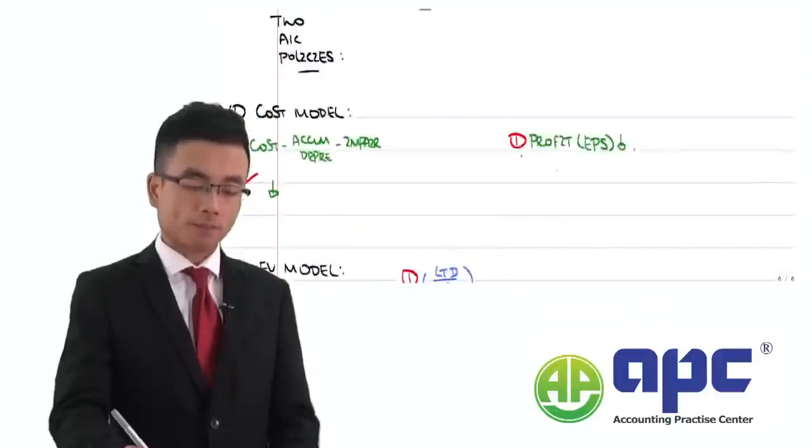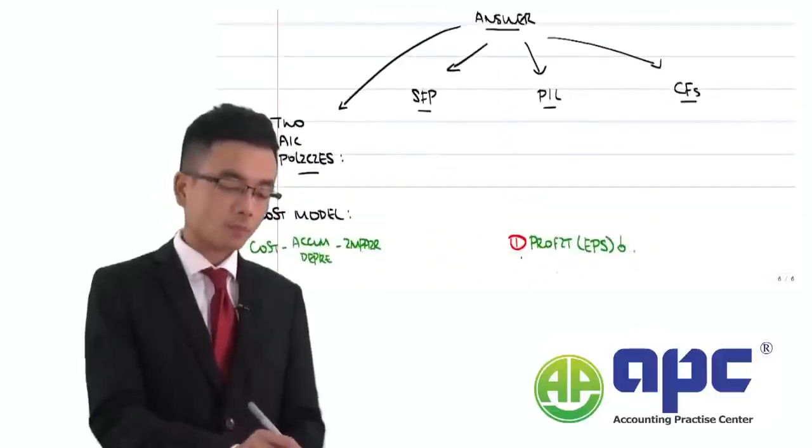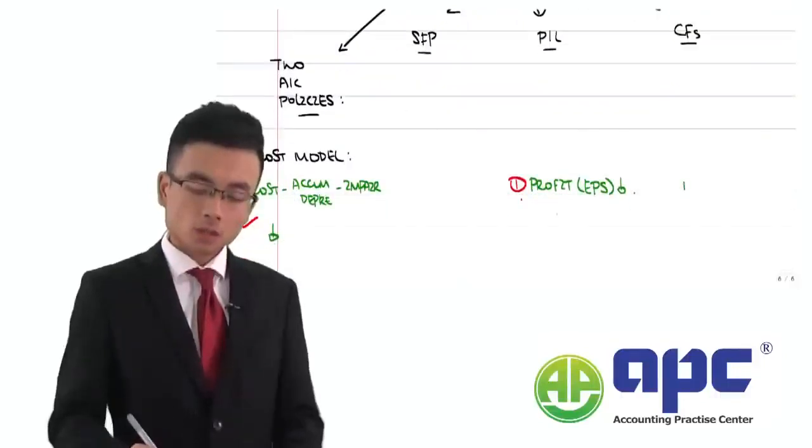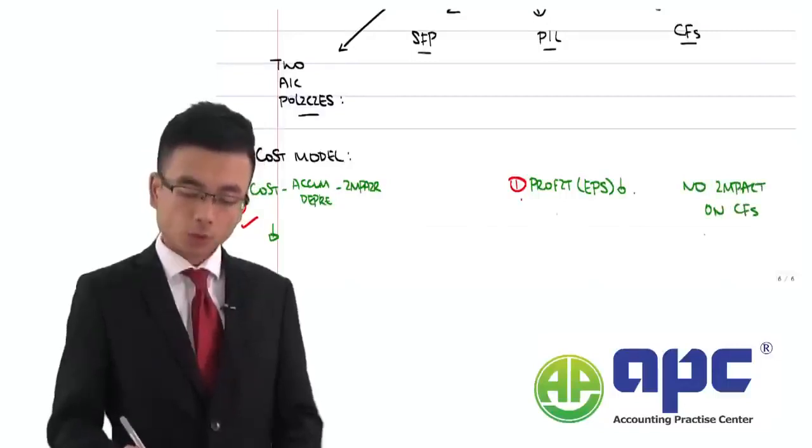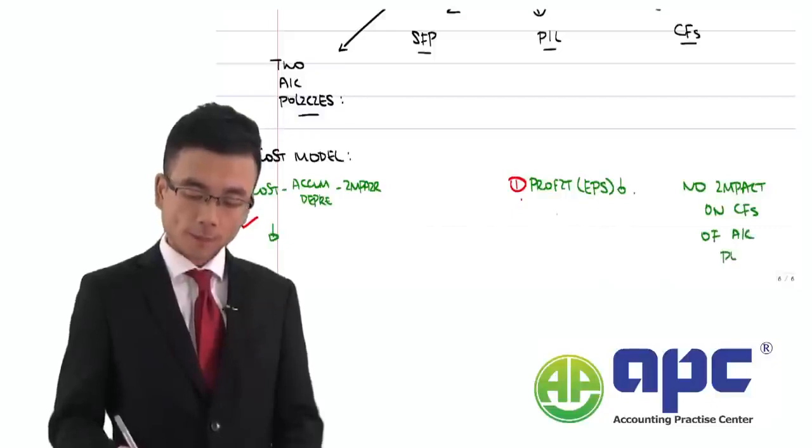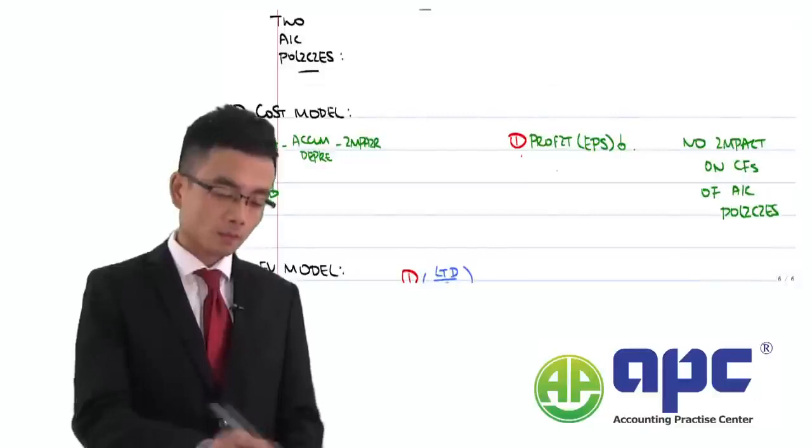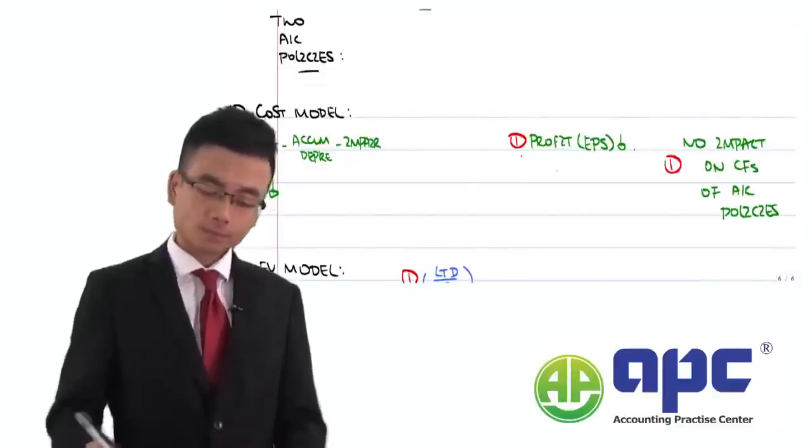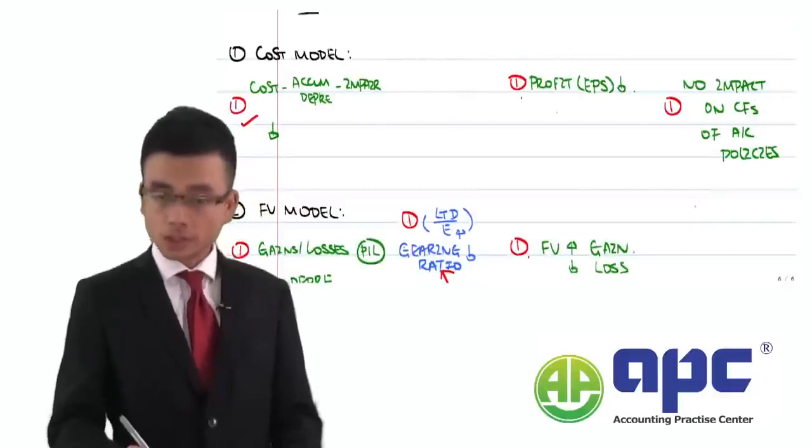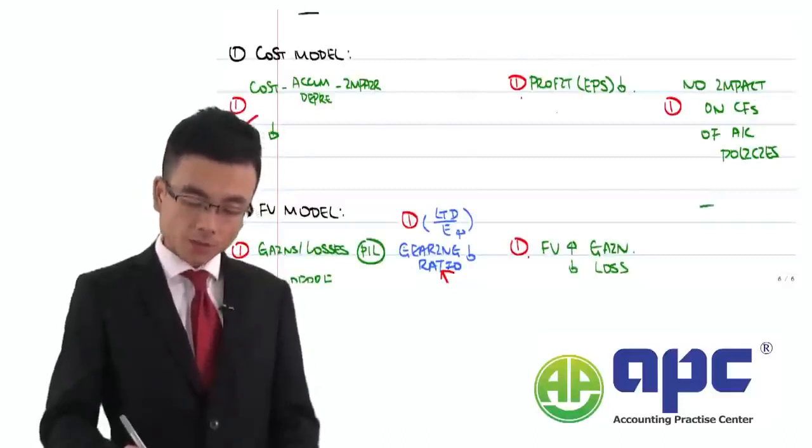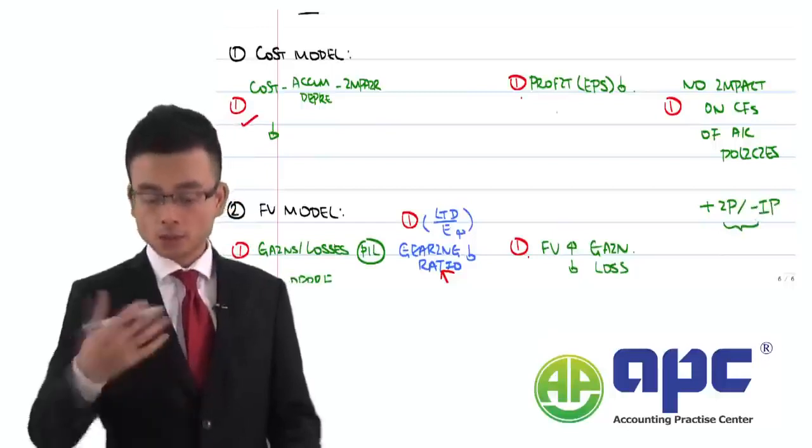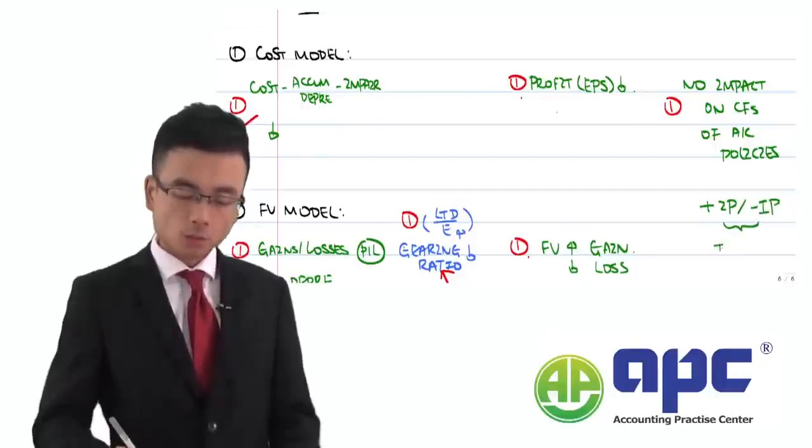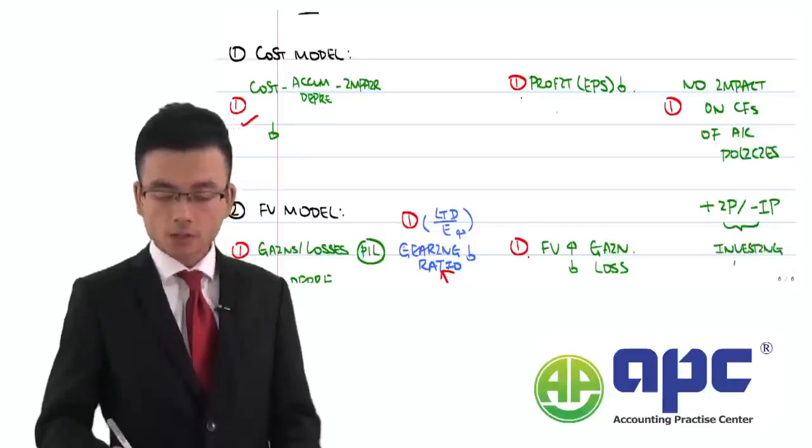How about for the cash flows then? For cash flows impact here, first of all, no impact on cash flows of which accounting policies that you've used. Here's how you get one mark. At the same time, we're going to say that the acquisition of investment property or reduced investment property, the proceeds that you're going to spend or get should be included in the investing activity in a statement of cash flows. So, here's how we get one mark.